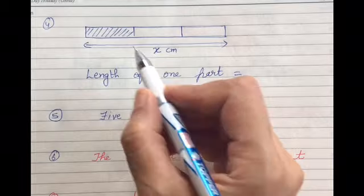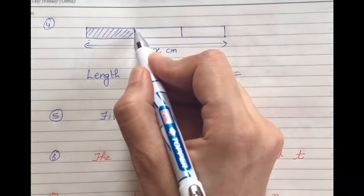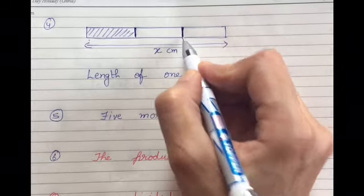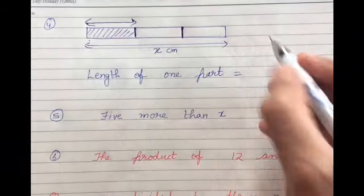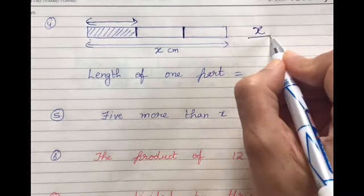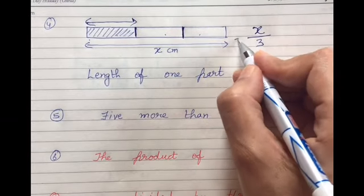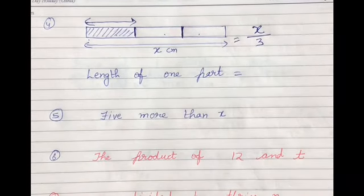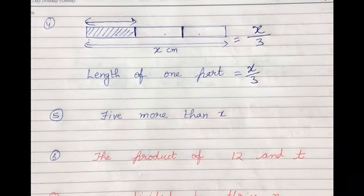After this we have a very long box and we have converted into 3 equal parts. So length of this small part will be equal to total length divided by 1, 2, 3. So this is the algebraic expression for the one part, so it will be X upon 3.